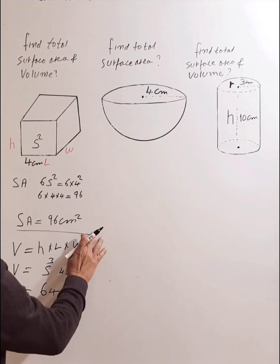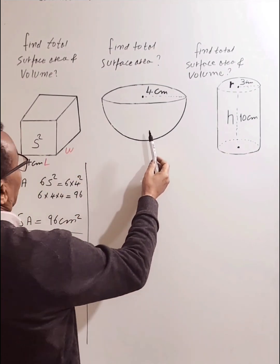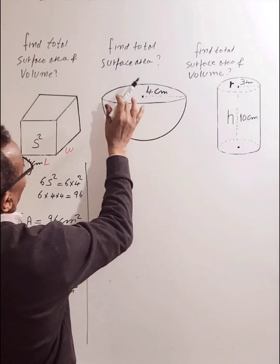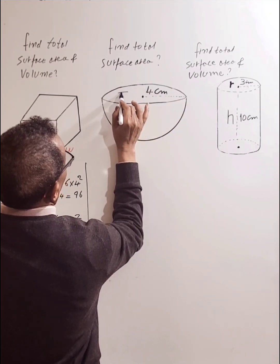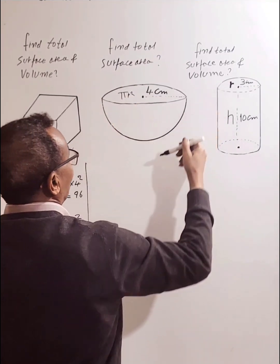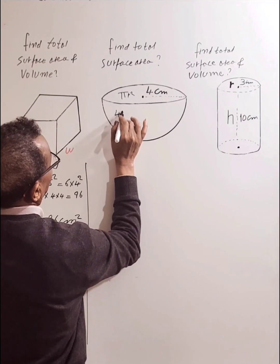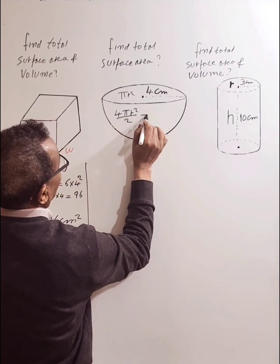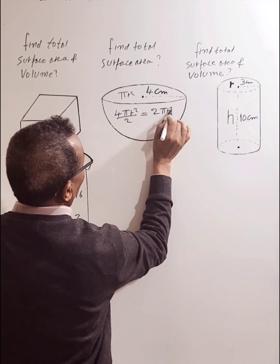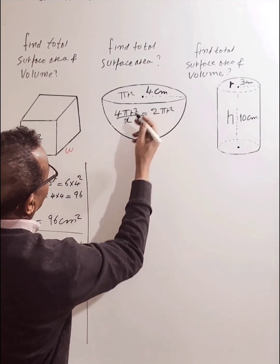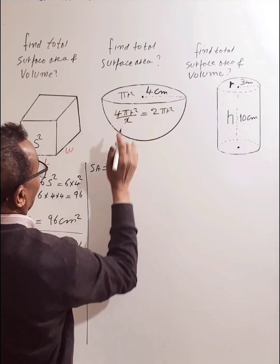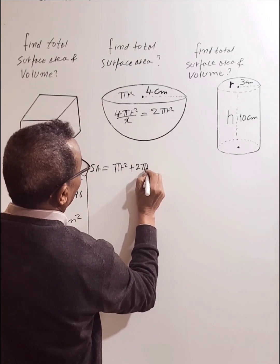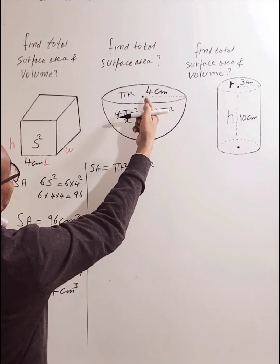Now let's find the total surface area of the hemisphere — half of a sphere. The total surface area has two parts: the flat circular base, which has area πr², and the curved surface, which is half the surface area of a full sphere. The surface area of a full sphere is 4πr², so the curved part is 2πr². The total surface area is πr² + 2πr².